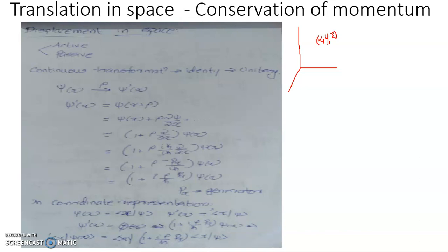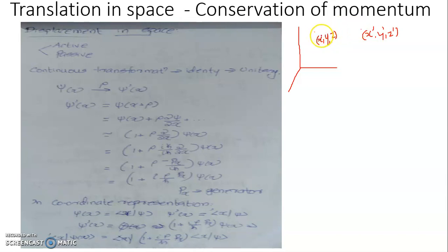If it is having a constant velocity, it will be associated with a constant linear momentum. When the position of the system changes from coordinate x, y, z to another coordinate x prime, y prime, z prime, we say that it has resulted in a displacement equal to the square root of (x prime minus x)² plus (y prime minus y)² plus (z prime minus z)². This kind of displacement is referred to as an active displacement, where the object itself moves from one point to another and its coordinate changes.